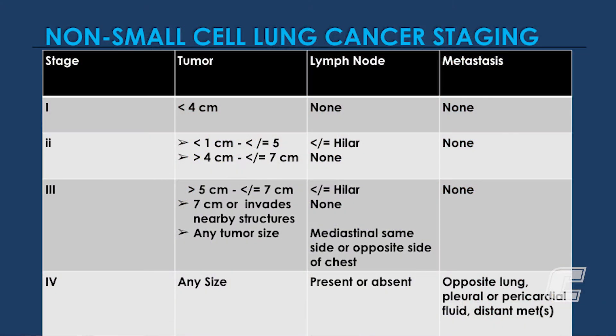Non-small cell lung cancer staging involves a more complicated system defined by tumor characteristics, lymph node involvement, and the presence or absence of metastasis. Stage 1 involves tumors that are less than 4 centimeters in size and confined to one area of the chest. Stage 2 involves tumors that have spread to the lymph nodes within the same lung that the tumor is in.